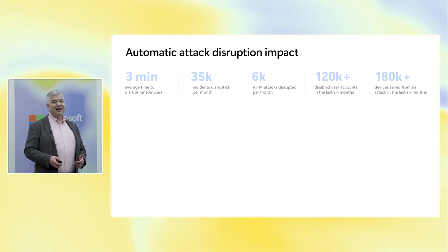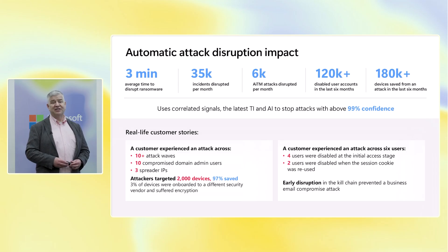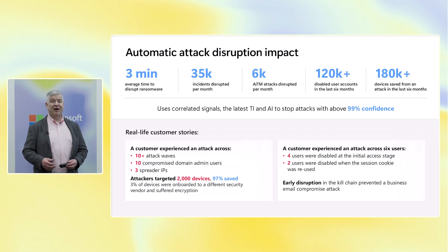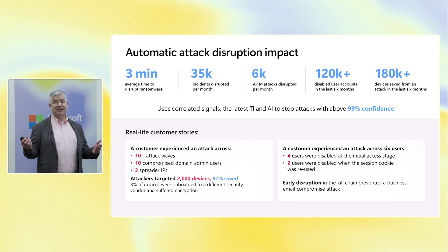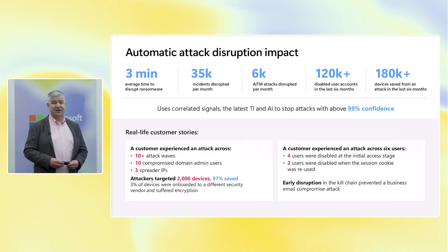Automated attack disruption has had a massive impact. So far, we've already disabled about 35,000 attacks per month. We take an average of about three minutes to detect and disrupt ransomware attacks. We've protected over 120,000 devices, as well as 165,000 user accounts.